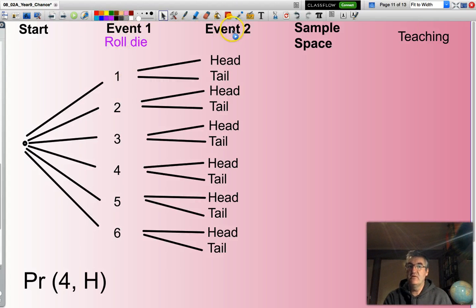Second event, tossing the coin, either a head or a tail. So what will my sample space look like? Well, all the combinations. One followed by a head, one followed by a tail. Two followed by a head, two followed by a tail.